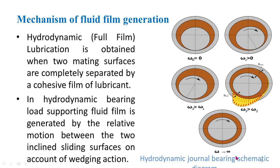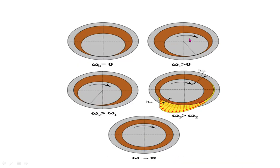In this figure, initially the speed is low, that is zero — omega is equal to zero for the shaft. There is no fluid film and the shaft rests over the bearing.